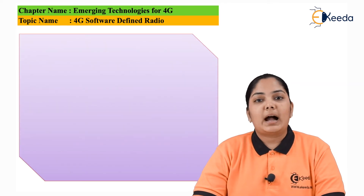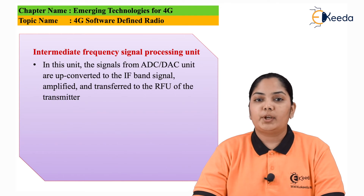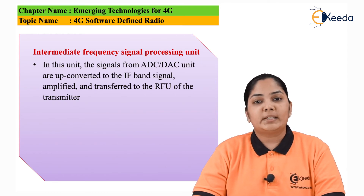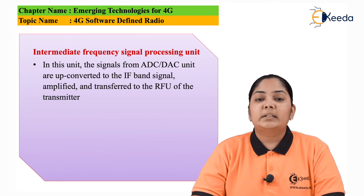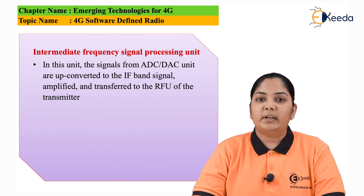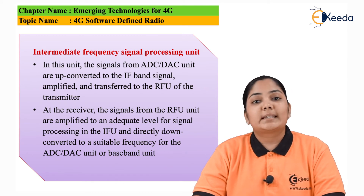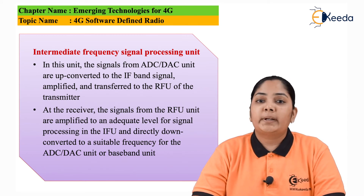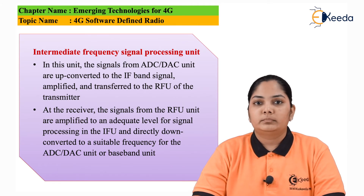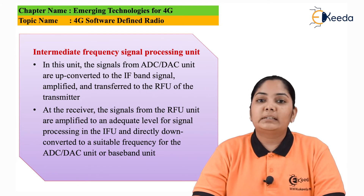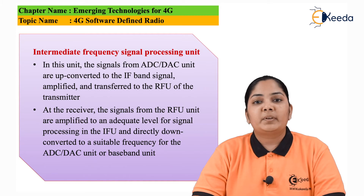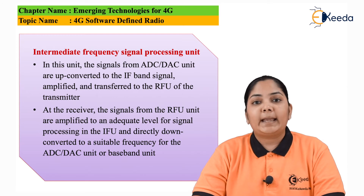All units have two parts: one for transmission and one for reception. The next unit is the IFU, the intermediate frequency unit. At the transmitter side, the signal from the A-to-D conversion is amplified and up-converted to the intermediate frequency required for processing. At the receiver side, the signal received from the antenna is passed via the RFU to the IFU, where it is amplified first, then down-converted to frequencies suitable for use in the A-to-D conversion.